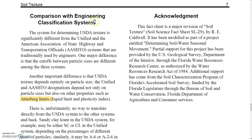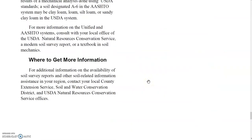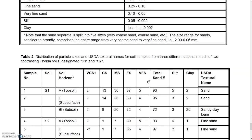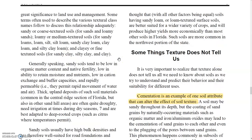In comparison with engineering classification systems, there are two soil classification systems: the USDA texture classification we recently discussed, and the AASHTO (American Association of State Highway and Transportation Officials) system, which considers additional factors such as liquid limit and plasticity index to determine suitability for construction.